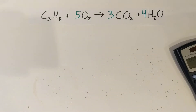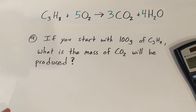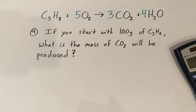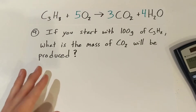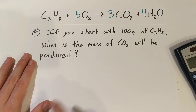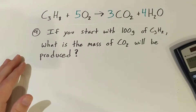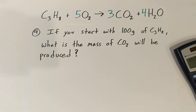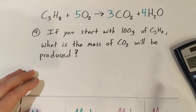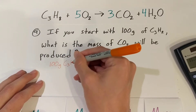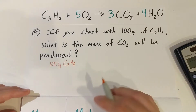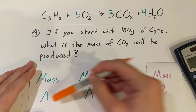Let's take a look at number nine. In these questions we're always starting with 100 grams of propane. So, same thing: if we start with 100 grams of propane, what's the mass of the carbon dioxide that we're going to make? Again, we're starting with our 100 grams of propane — our first step is to go from grams of propane to moles.